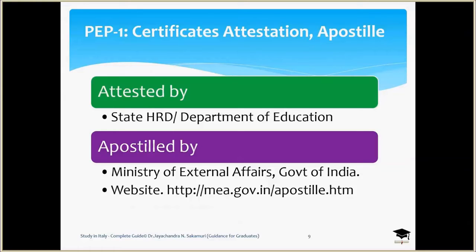Before submitting the application for pre-enrollment at the Italian Embassy, the educational certificates and diplomas must be attested by the Department of Education of the particular state government. For example, if you are in Andhra Pradesh or Telangana, go to that state board, or if in Chandigarh, go to the Chandigarh state board — these offices are mostly at the secretariat. Once attestation is done, proceed with the apostille from the Ministry of External Affairs, Government of India. Their website is mea.gov.in, which provides the procedure for attestation and apostille.